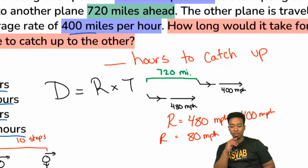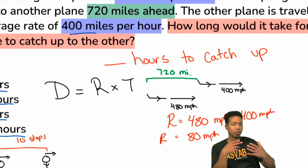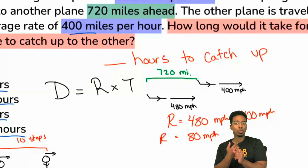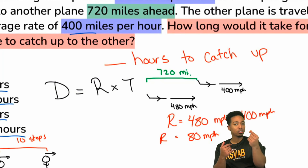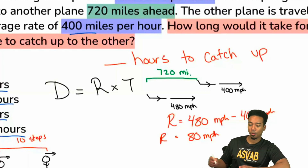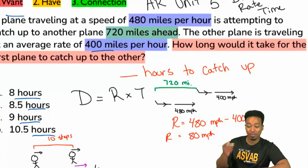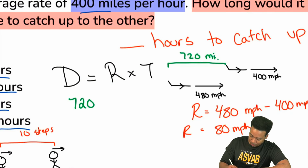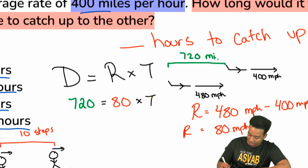Be honest — I'm not here to stroke my own ego. If you're still working on translating English into math, this may be a stretch, and that's fine, but we have to be honest so we can make adjustments. Same direction means subtract. So our true rate is 80. When we plug in what we have: our distance is 720, our catch-up rate is 80 miles per hour, and we'll solve for time by dividing both sides by 80.